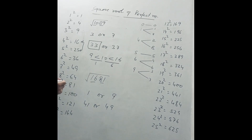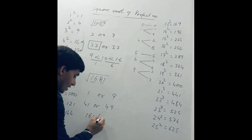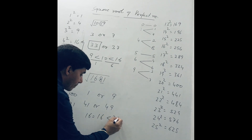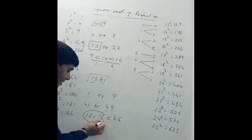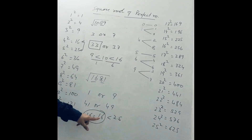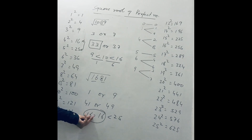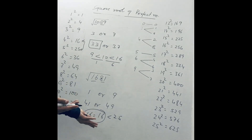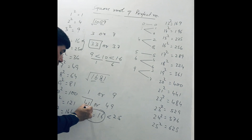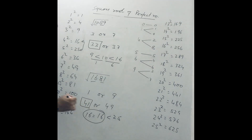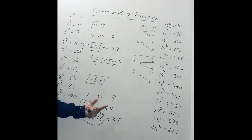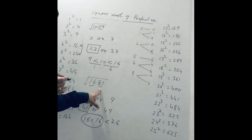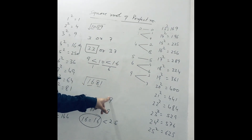But we see 16 is equal to 16 and less than 25, meaning 16 is exactly equal to 4². So the lowest value, 41, is the square root of 1681.